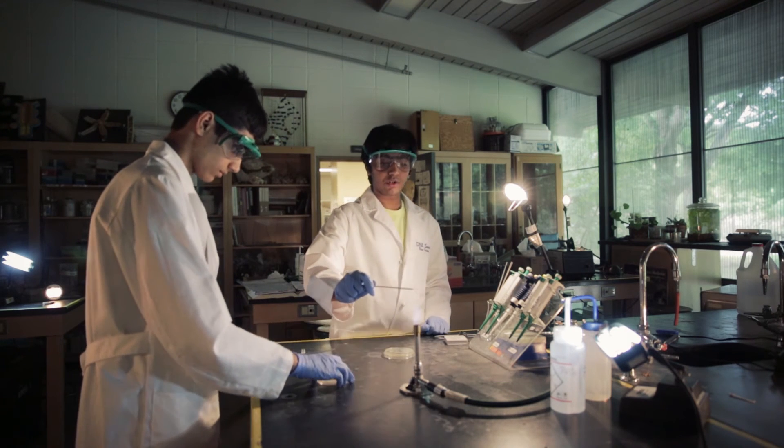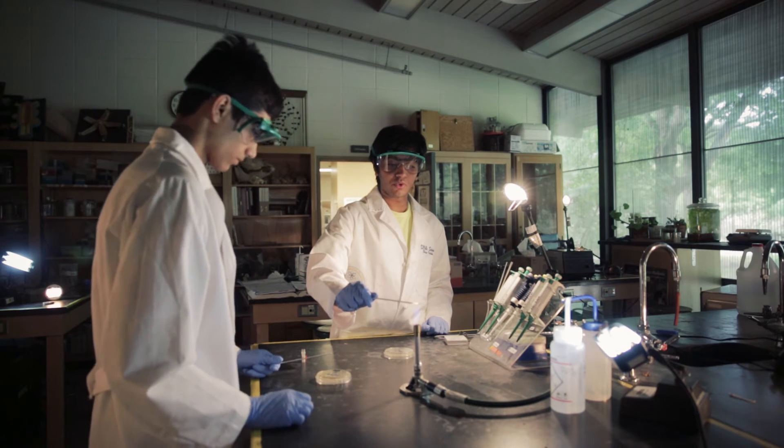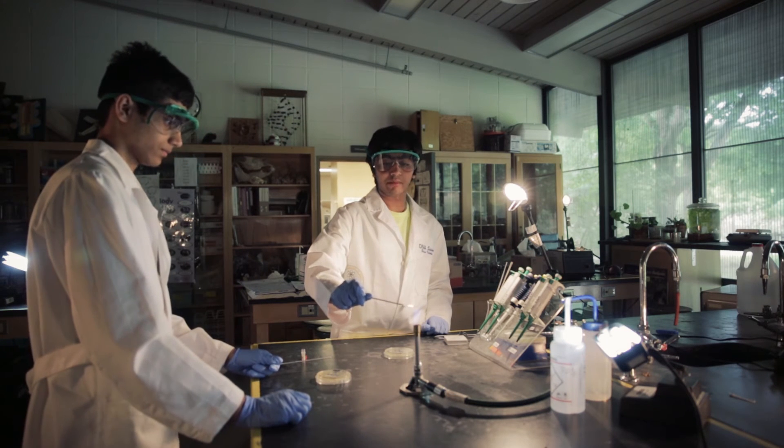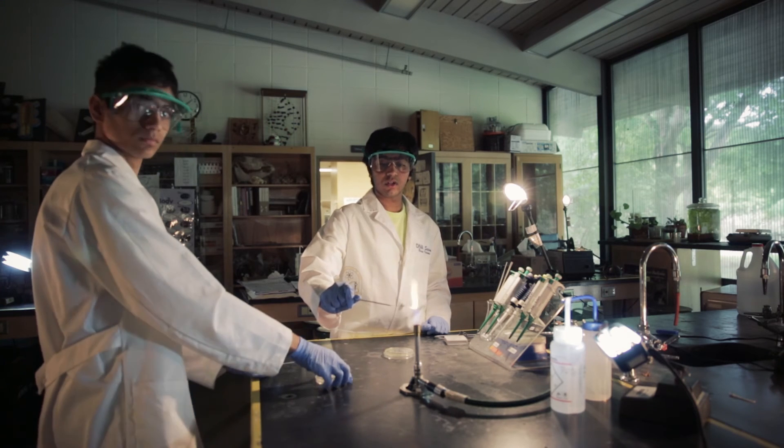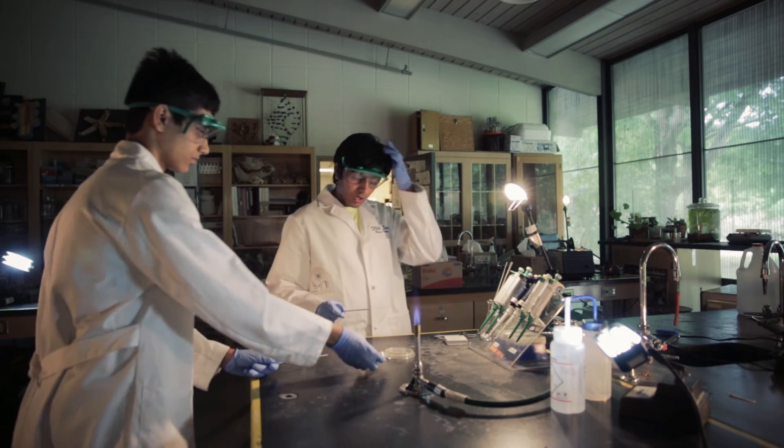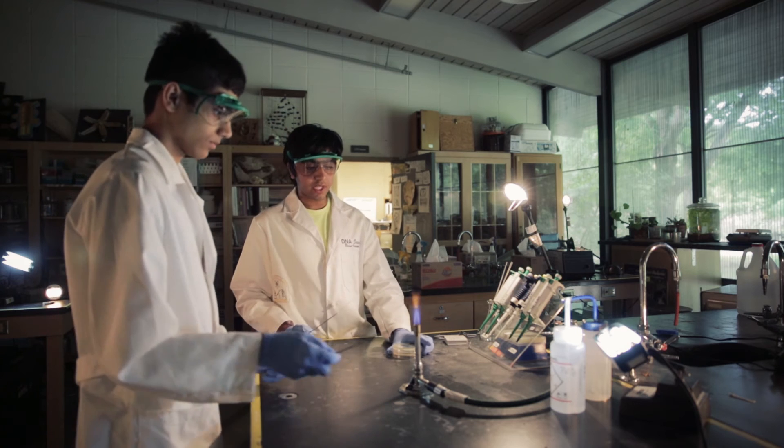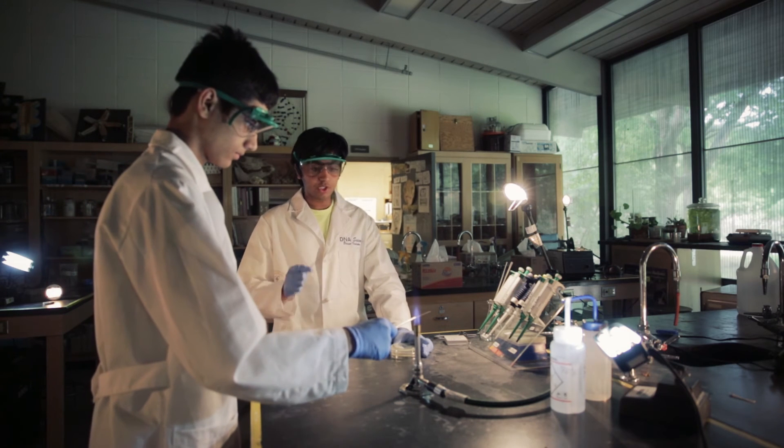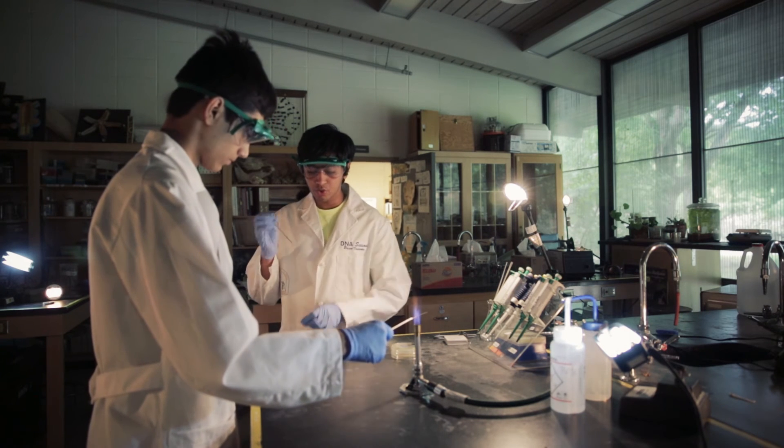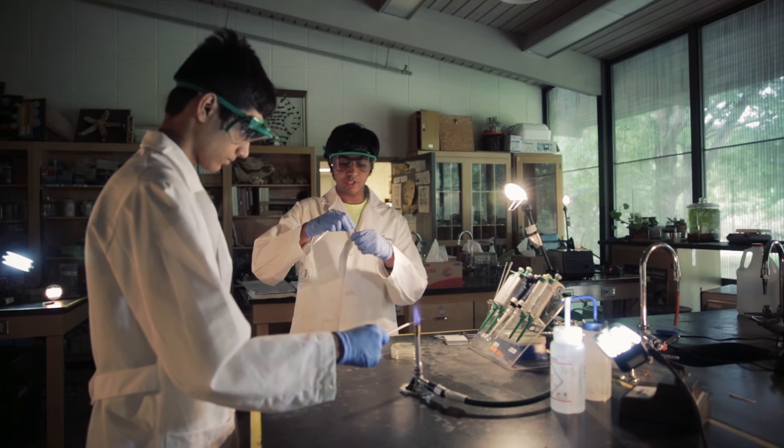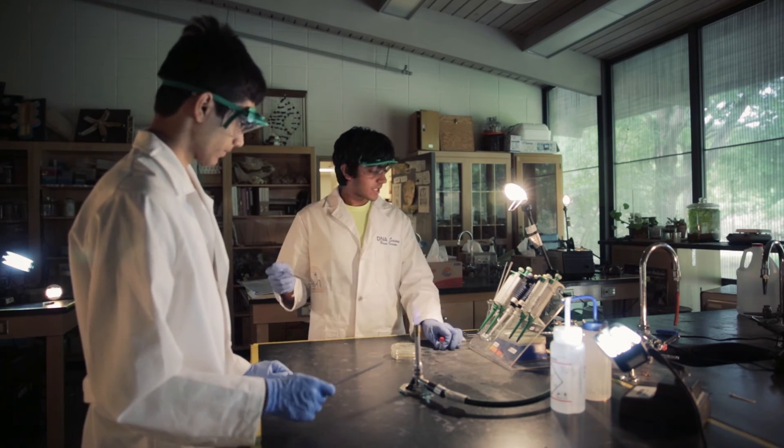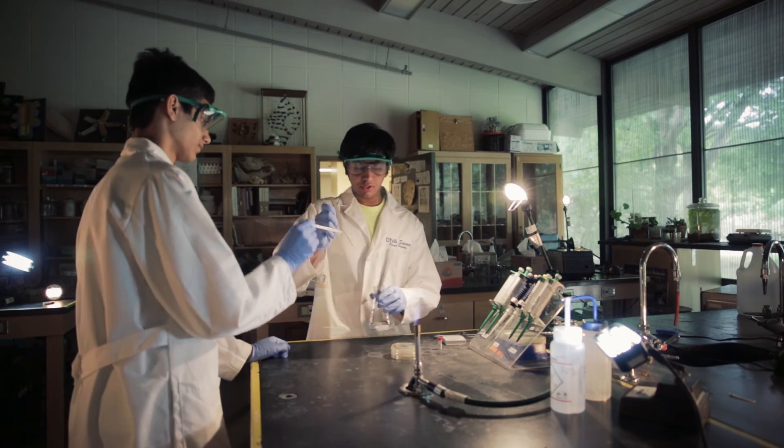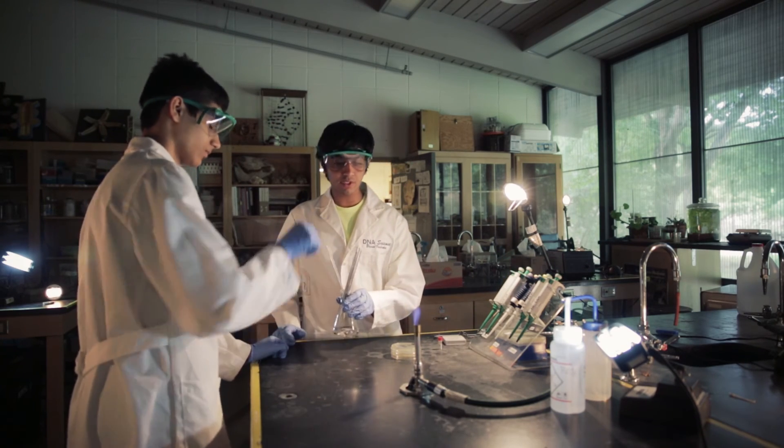And one more time, you make sure your loop is sterile. So you flame it one more time, same way. And if you're streaking any more plates at that time, then you can just put your loop into another one of these vials and take out more bacteria. Or if you're done, then you can just put these back in the bleach solution and let them stay there until next time.